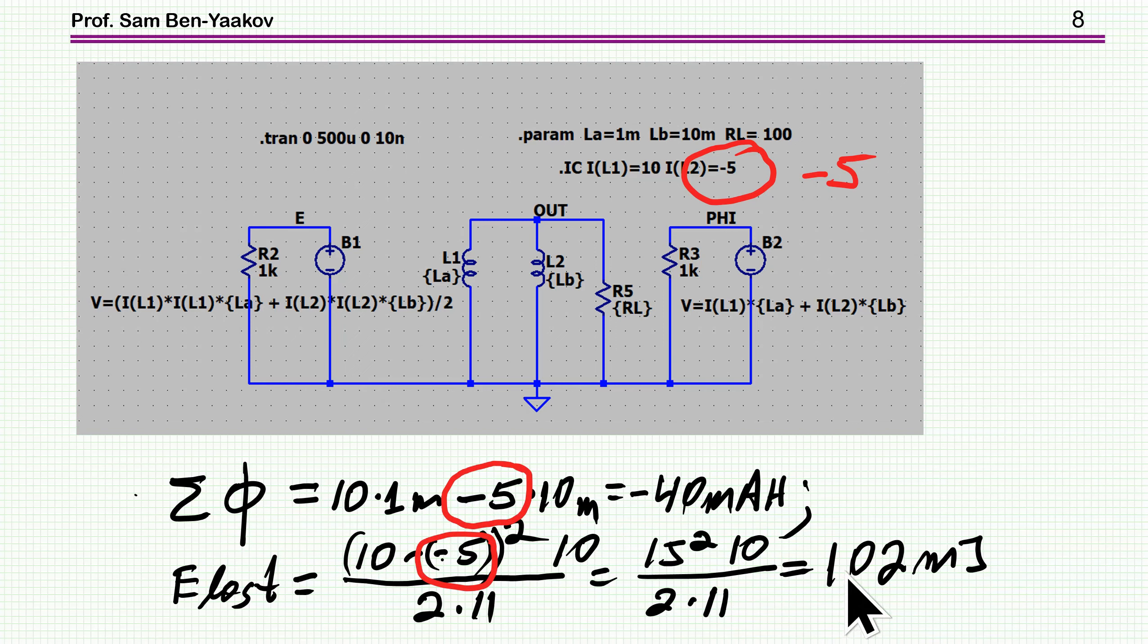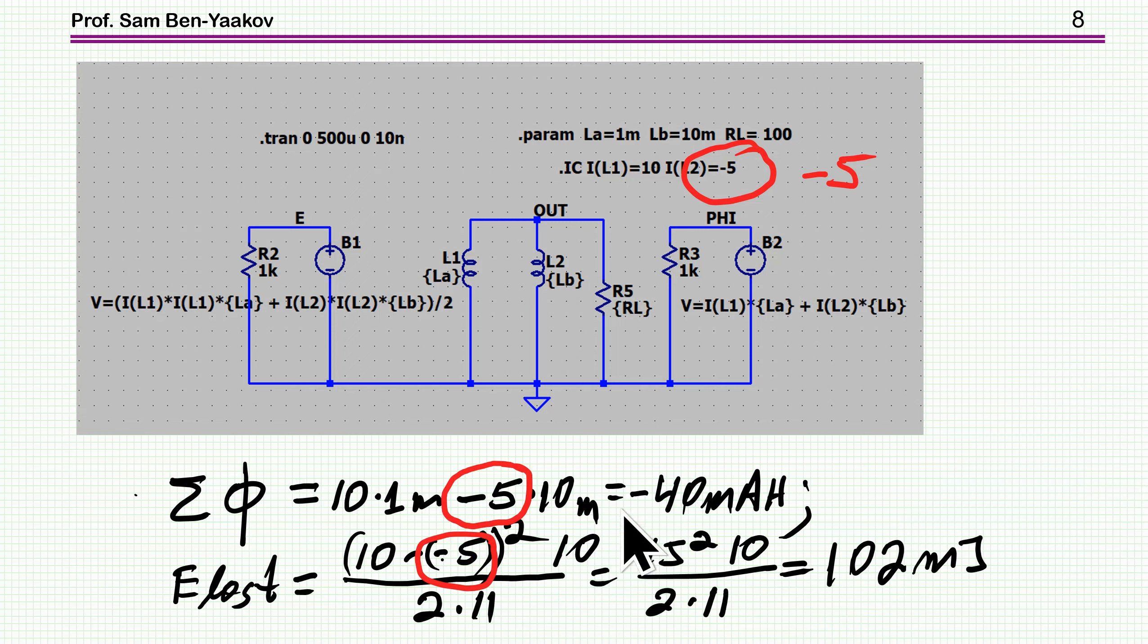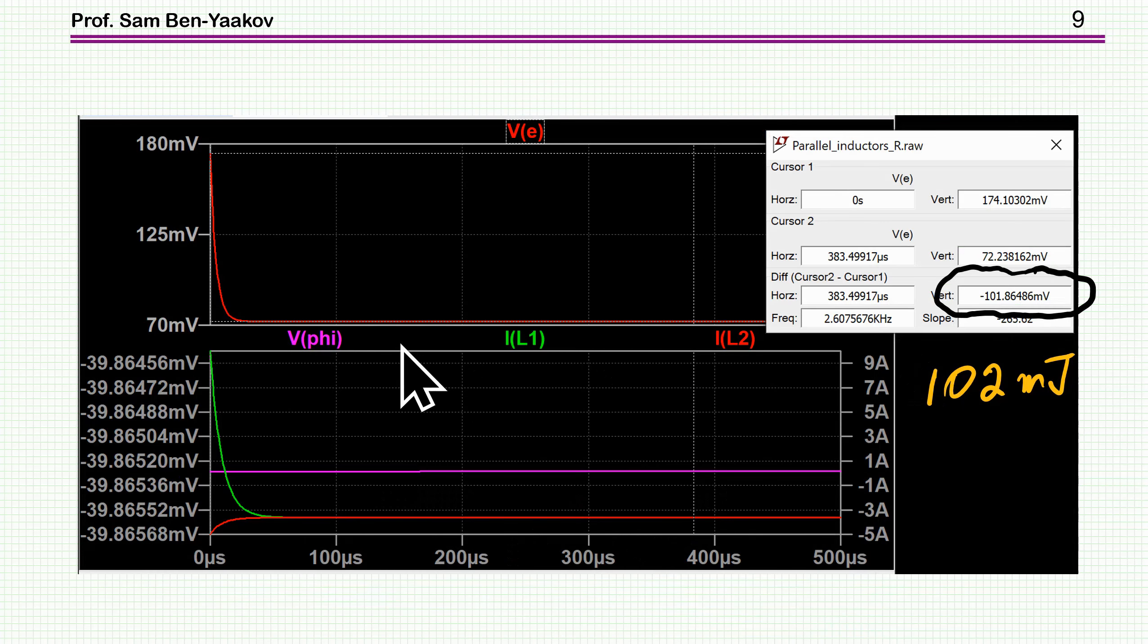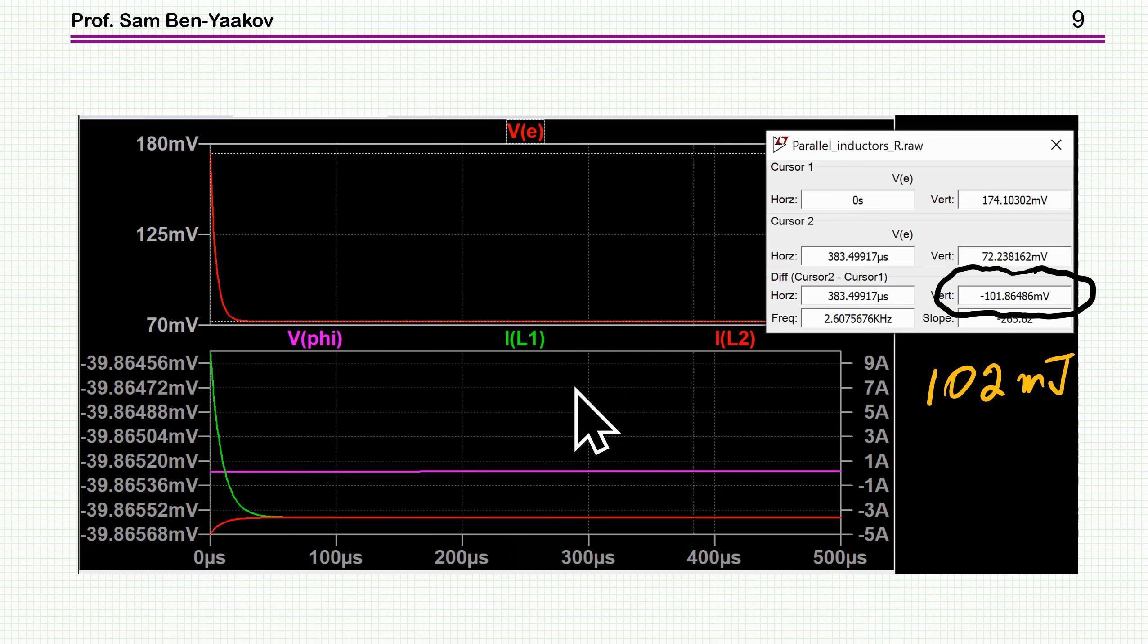So here it is, again, this is the current. Now it's minus 5 here, it's a negative value. Again, the total flux, according to the conservation of magnetic flux, is constant, and it is 40. And this is exactly what we found here, minus 40. And the energy loss here, using again the two cursors, is found to be here 101.86, and we have calculated to be 102, which is pretty much the same considering the numerical error that might occur here. So again, we see that it really doesn't matter what is the direction. As long as you keep the sign, you get the correct answer.